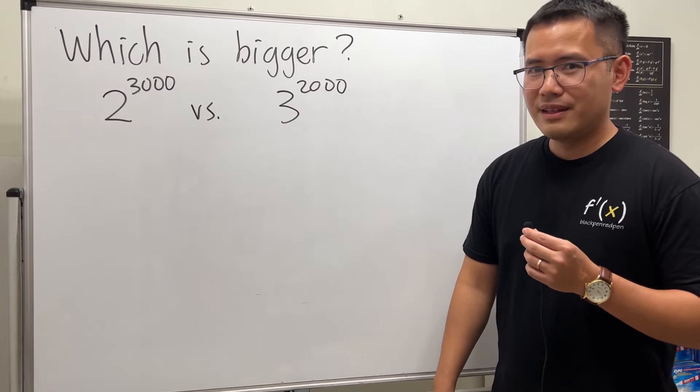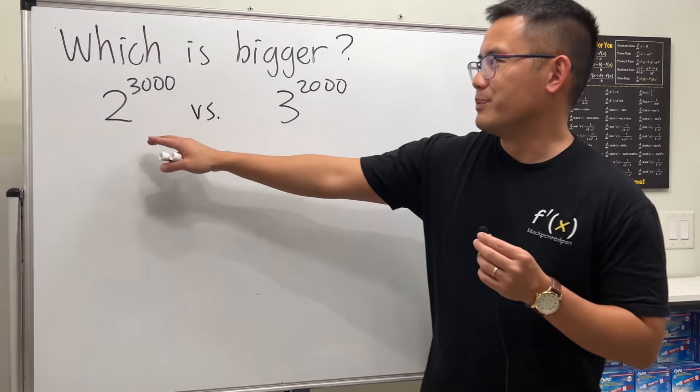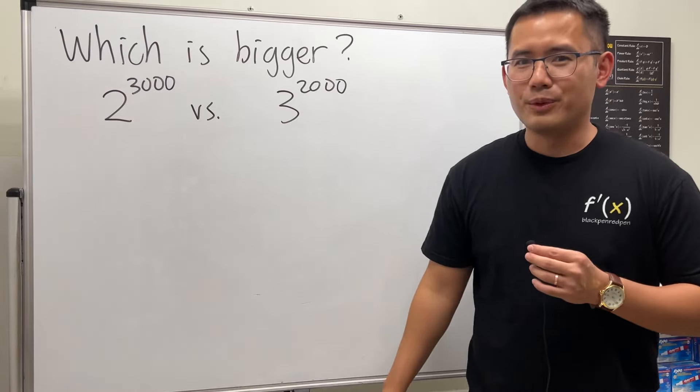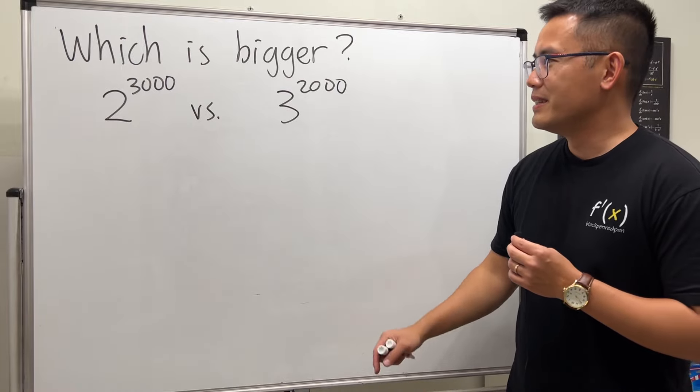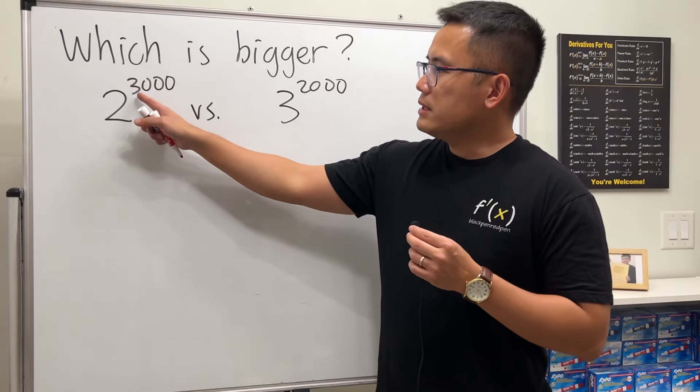All right, so have a look. If you put this on the calculator, most likely you'll crash your calculator or overflow. Likewise this. Well notice that this right here is the same as 3 times 1000.